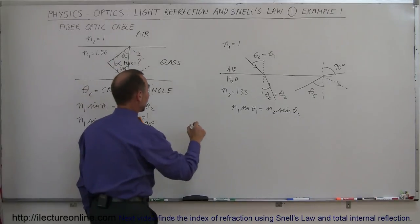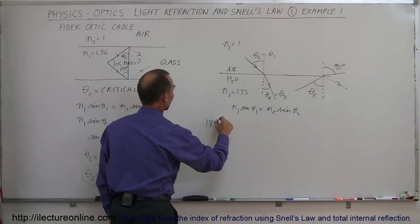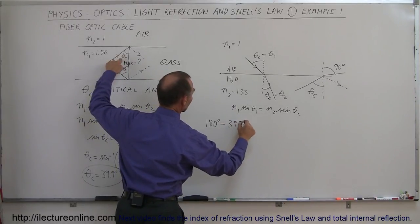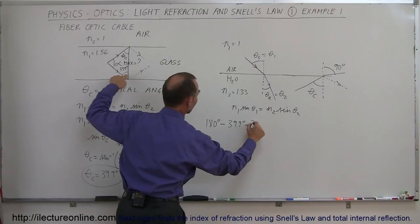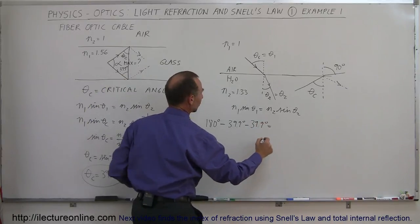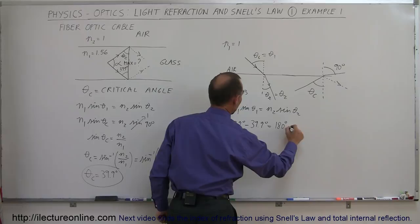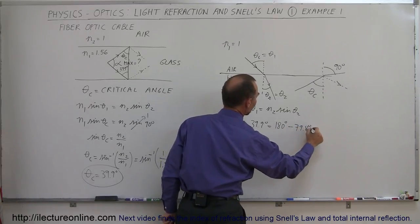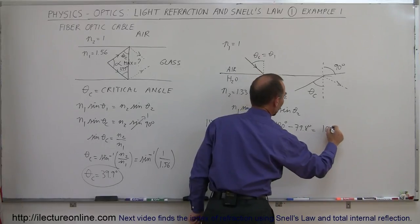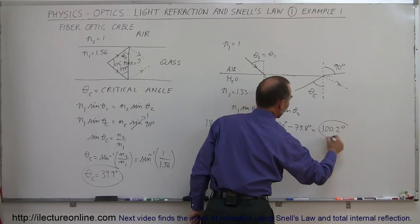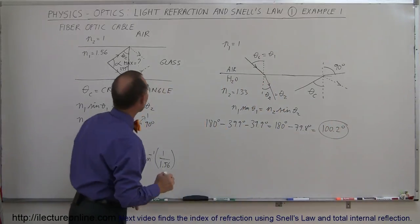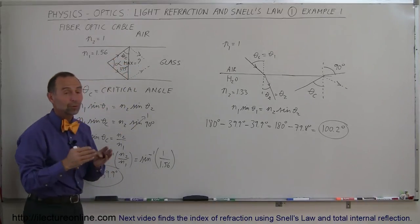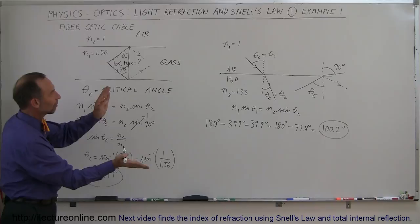So we can then say that 180 degrees minus one of the critical angles, 39.9 degrees, minus the other angle, 39.9 degrees, which is equal to 180 degrees minus, when you add those two together, you get 79.8 degrees, which is equal to 100.2 degrees, which means the largest angle that you can have here, that's the maximum angle, is 100.2 degrees of two diverging beams of light.